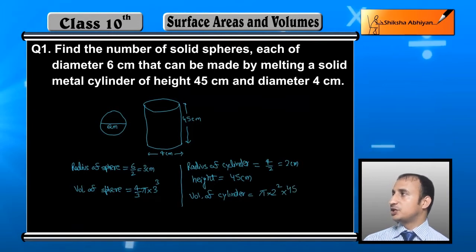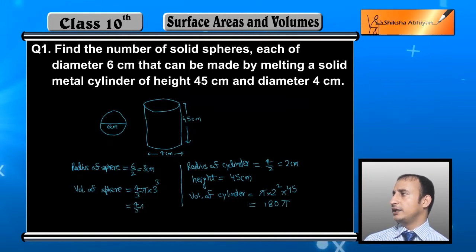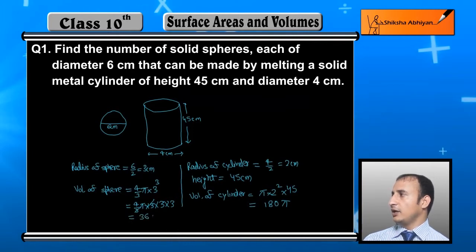Now student this will be 180 pi for the cylinder. And for sphere this is 4 upon 3 pi into 3 into 3 into 3. The 3s cancel, 3 times 3 is 9, 4 times 9 is 36 pi. These are the volumes.